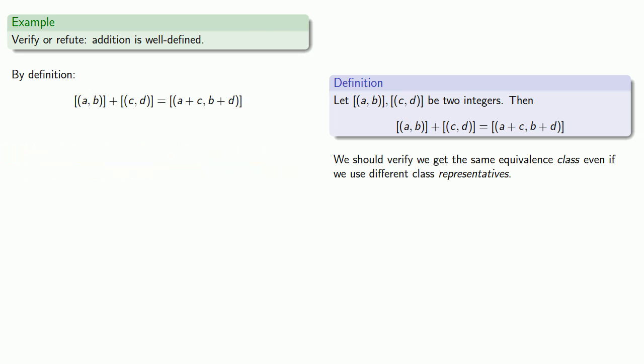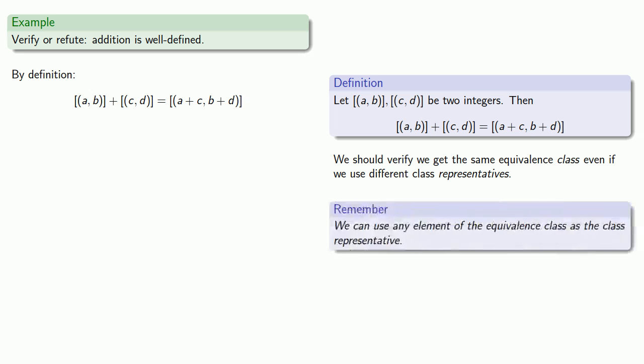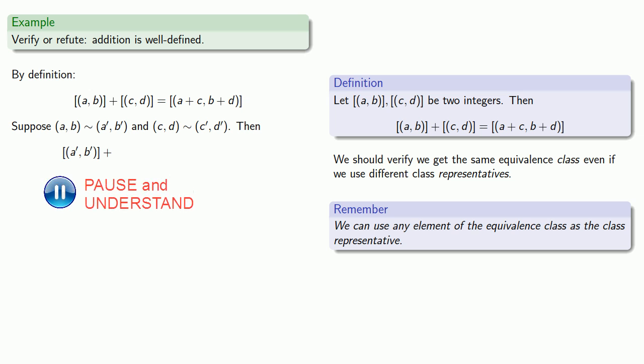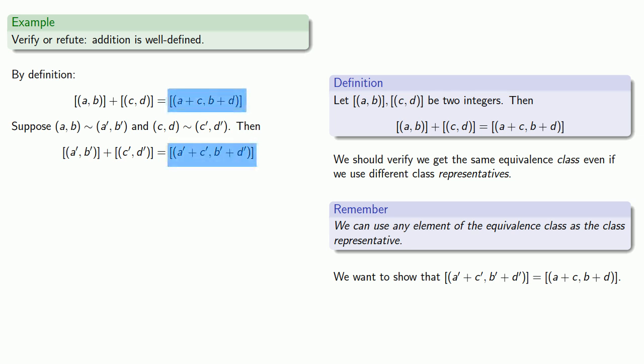And so we should verify we get the same equivalence class even if we use different class representatives. So remember, we can use any element of the equivalence class as the class representative. So if AB is equivalent to A'B' and CD is equivalent to C'D', then the equivalence class AB is the same as the equivalence class A'B'. The equivalence class CD is the same as the equivalence class C'D'. And their sum will be the equivalence class A' plus C'B' plus D'. And we want to show that these two equivalence classes are equal.